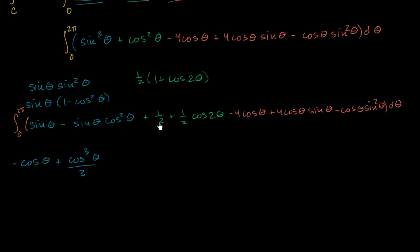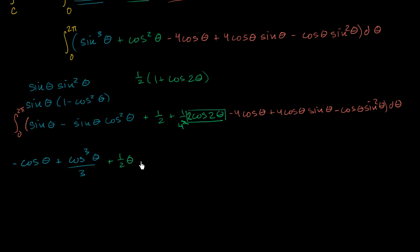The antiderivative of one half with respect to theta is plus one half theta. For the antiderivative of cosine(2 theta): the derivative of 2 theta is 2, so we multiply and divide by 2 — putting a 2 inside and making the coefficient one fourth. Now we have the derivative of 2 theta sitting there, so the antiderivative is sine of 2 theta, giving us plus one fourth sine of 2 theta.